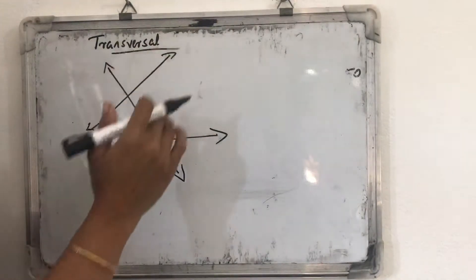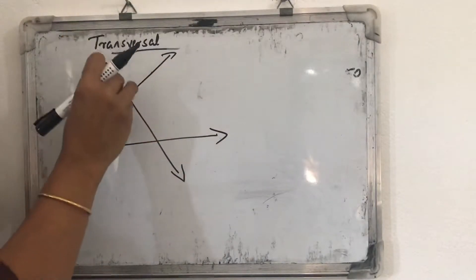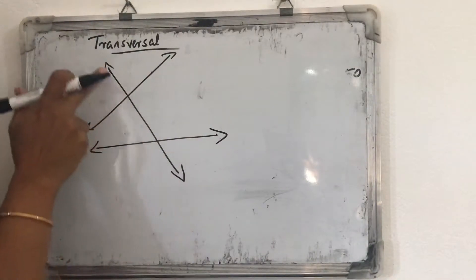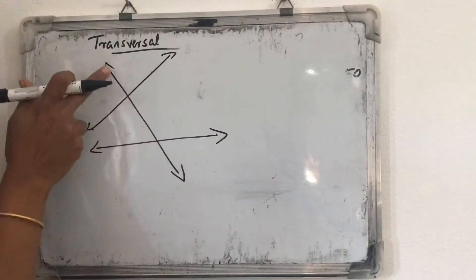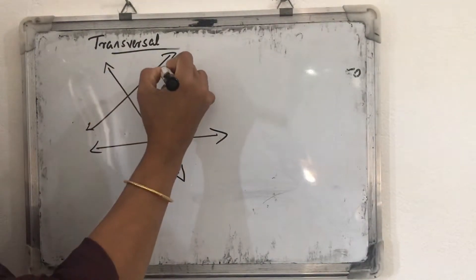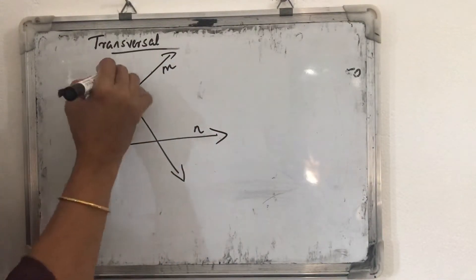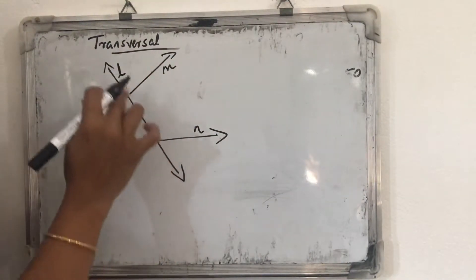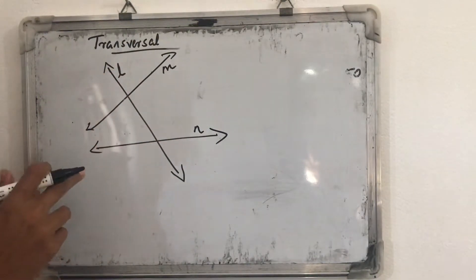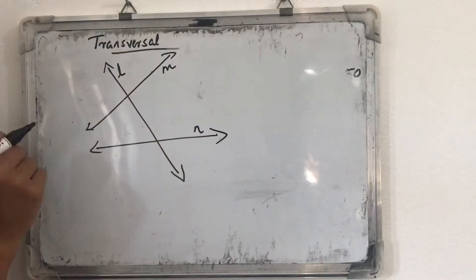Transversal means, in a plane, a transversal is a line. This is a transversal. Transversal is a line that intersects a set of two or more lines. Here, one line is named M and another is L, and this transversal line L intersects these two lines at two points. Such type of lines are called transversal lines.